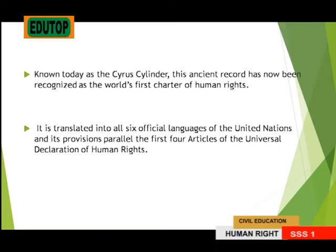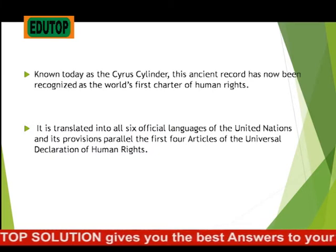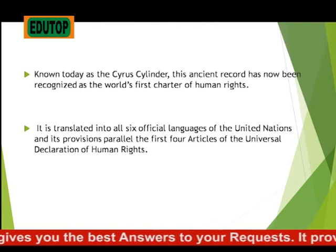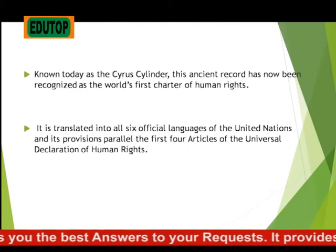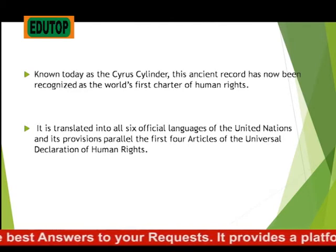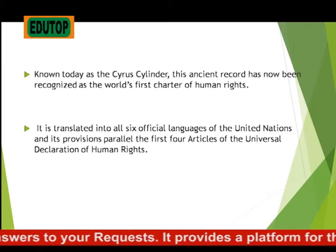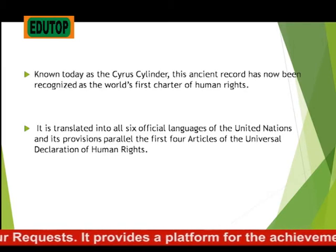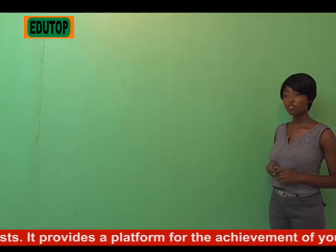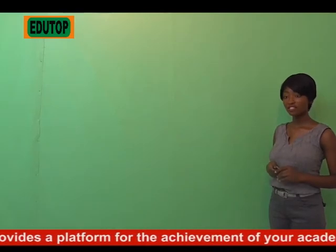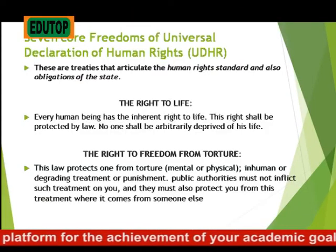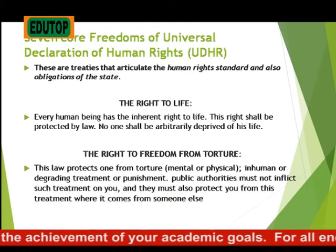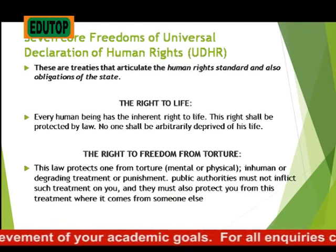These decrees were recorded on a baked clay cylinder in the Akkadian language with cuneiform scripts. This ancient record has now been recognized as the world's first charter of human rights. It is translated into all six official languages of the United Nations, and its provisions parallel the first four articles of the Universal Declaration of Human Rights.